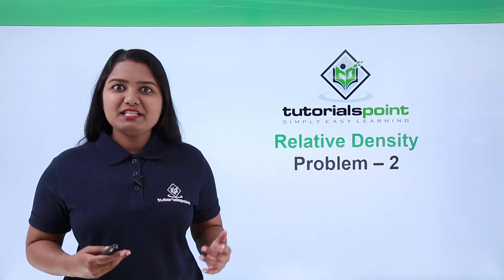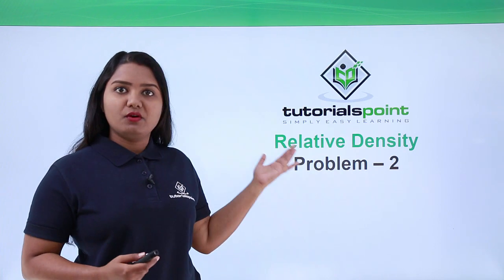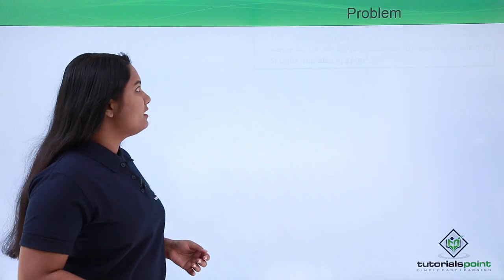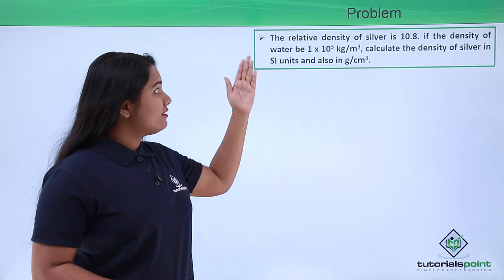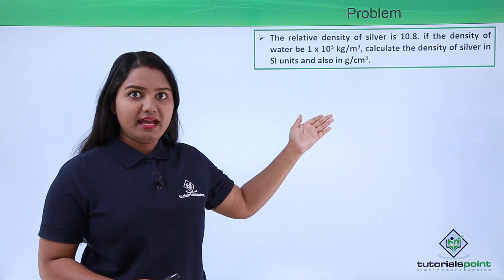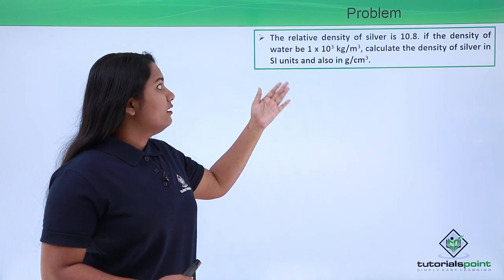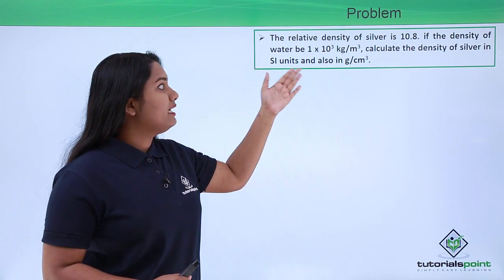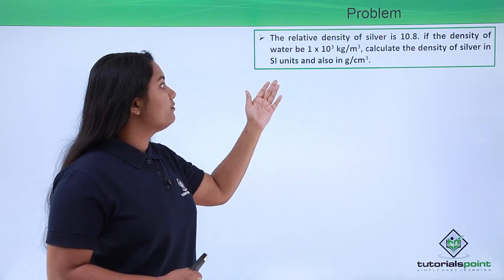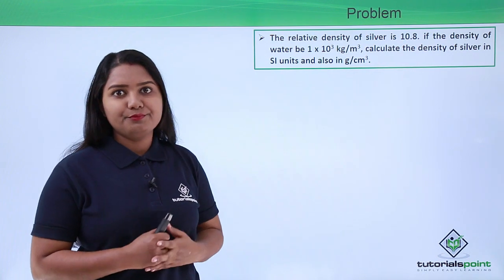Hello everyone. In this video we are going to solve another problem which is based on the concept of relative density. Here is the problem: the relative density of silver is 10.8. If the density of water is 1 × 10³ kg per meter cube, calculate the density of silver in SI units and also in grams per centimeter cube.